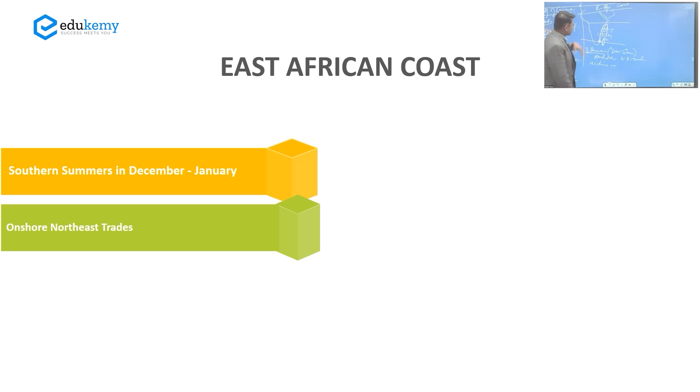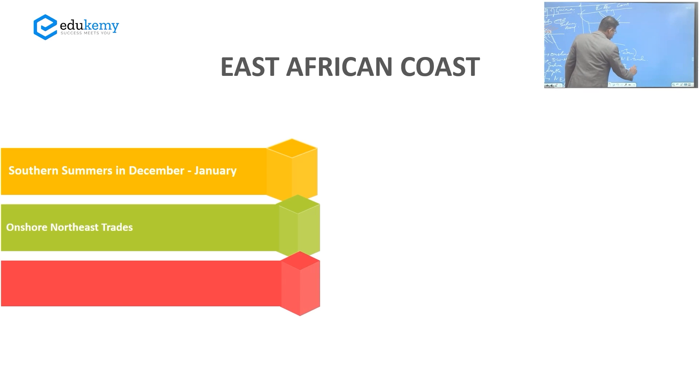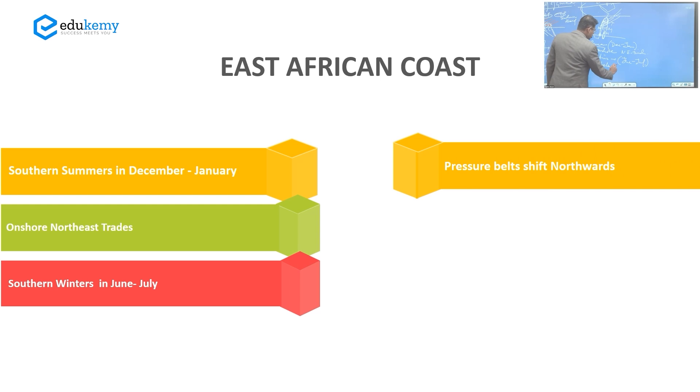So the winds they will cross, they should turn, but this is a very strong low pressure. The winds will start coming straight like this. Winters - what will happen? This is southern winter. Southern winter is when? This is the month of June-July. What will happen is the pressure belts shift.